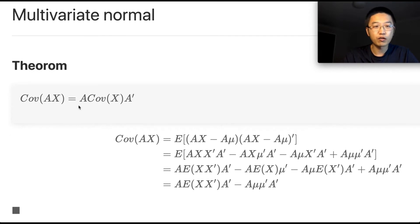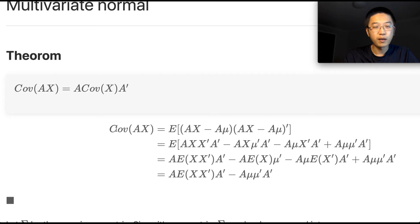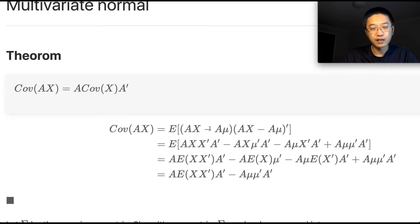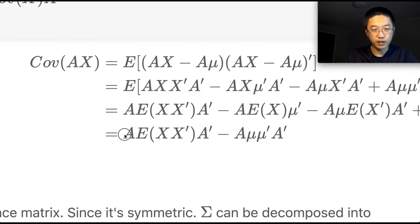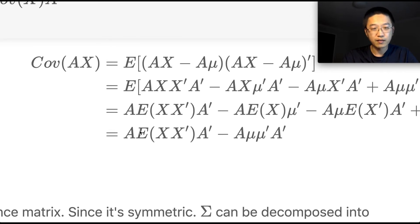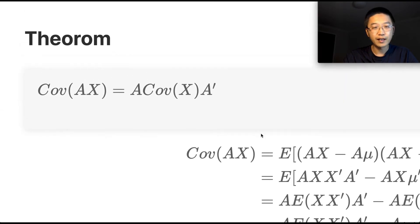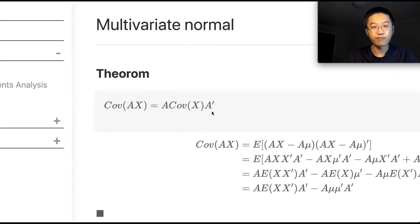The first one we want to talk about is the covariance of matrix A times a random vector x. By definition, covariance of Ax is the expected value of (Ax minus A·mu) times the transpose of that same form, where mu is the mean vector of x. If we expand it, we take A out from both terms and A-transpose out from both terms. What we're left with is the expected value of x times x-transpose minus mu times mu-transpose, which is just the covariance of x. So we get: covariance of Ax equals A times covariance of x times A-transpose.